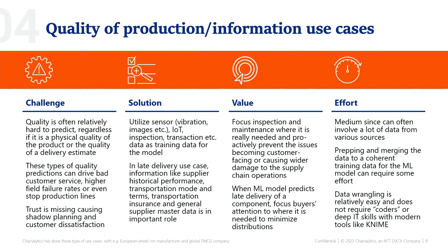Let's go to the production planning and quality side. There are two different types of quality: the physical quality of the production itself, and the quality of information. Physical quality means identifying something in the production process that is causing failure in the product — for example, if you're making tire rims, will there be a crack, a surface problem, or will the paint degrade soon? You find the reasons behind that by utilizing sensors, IoT inspections, transactions, and all kinds of process data, then training machine learning models with that to improve the production process.